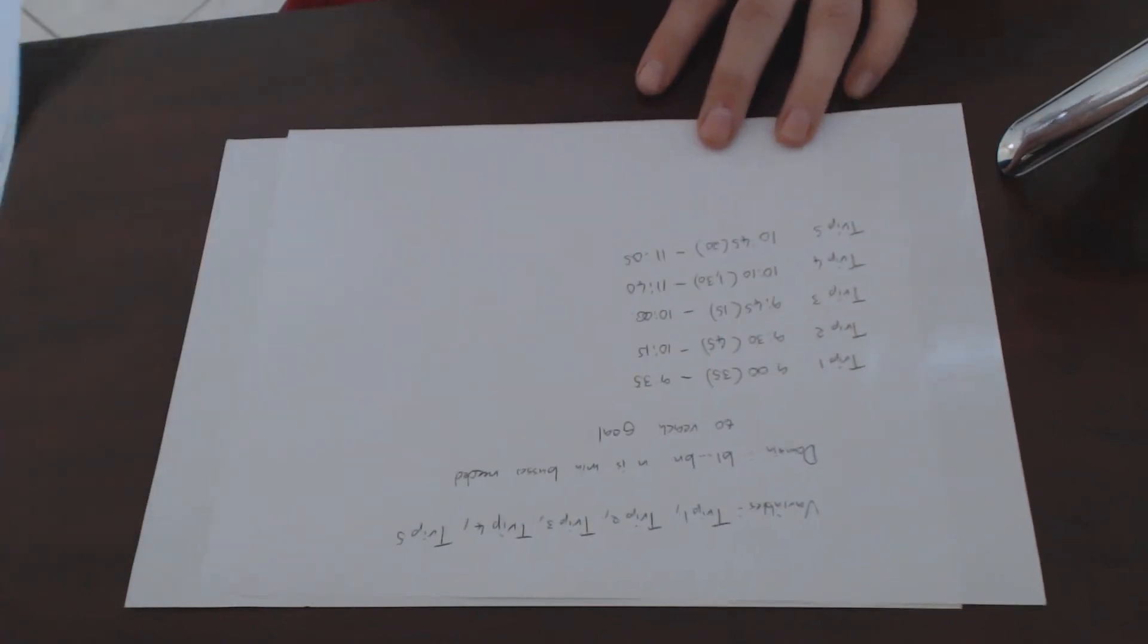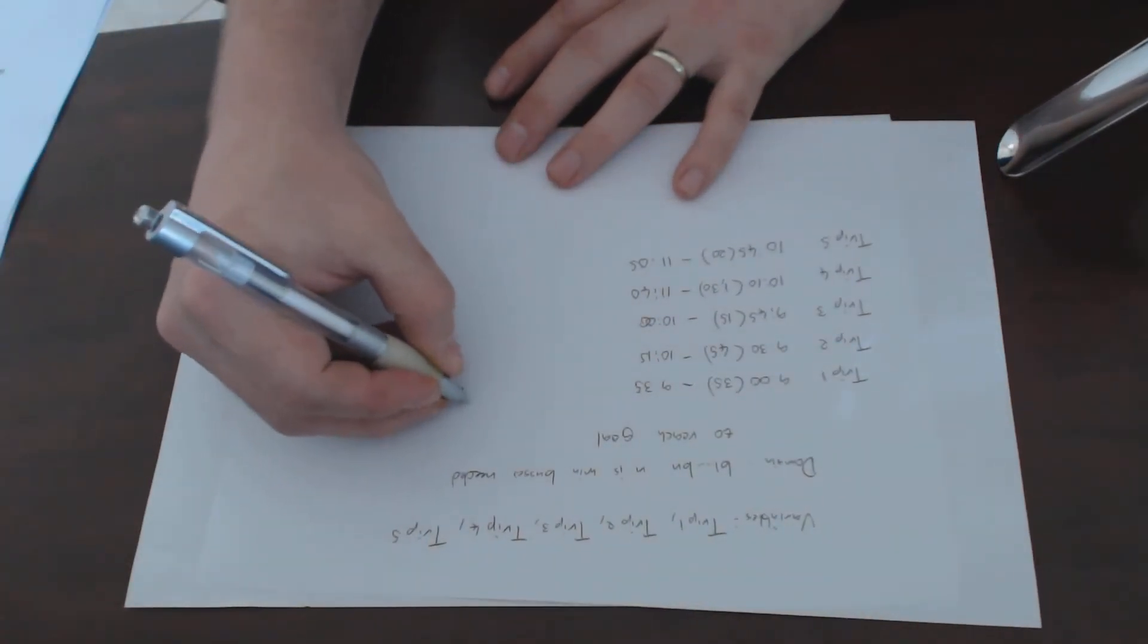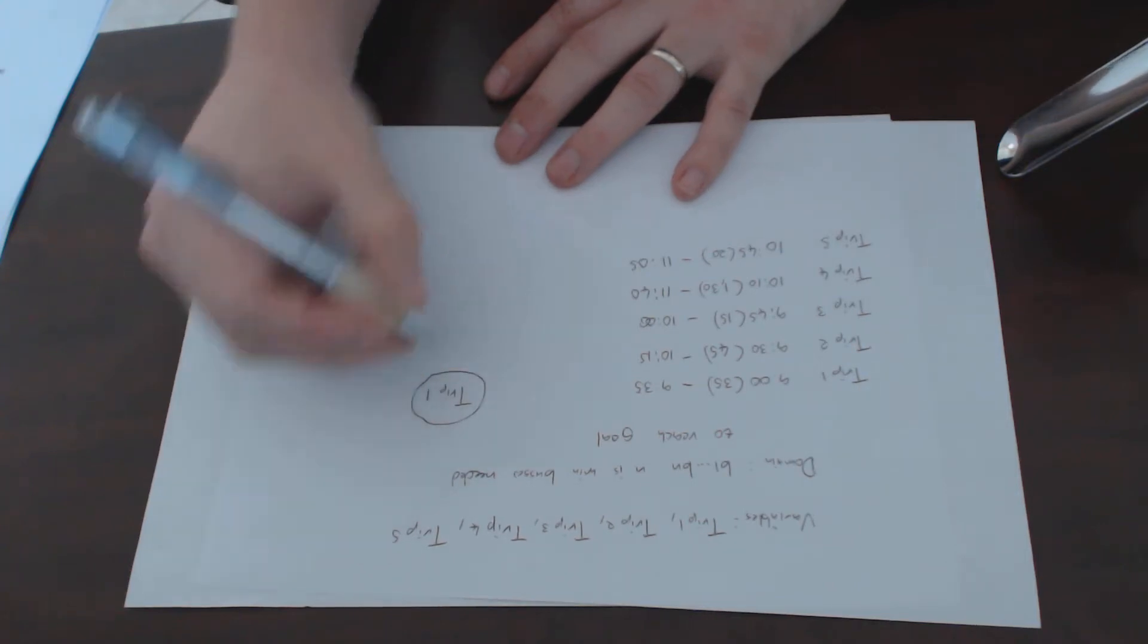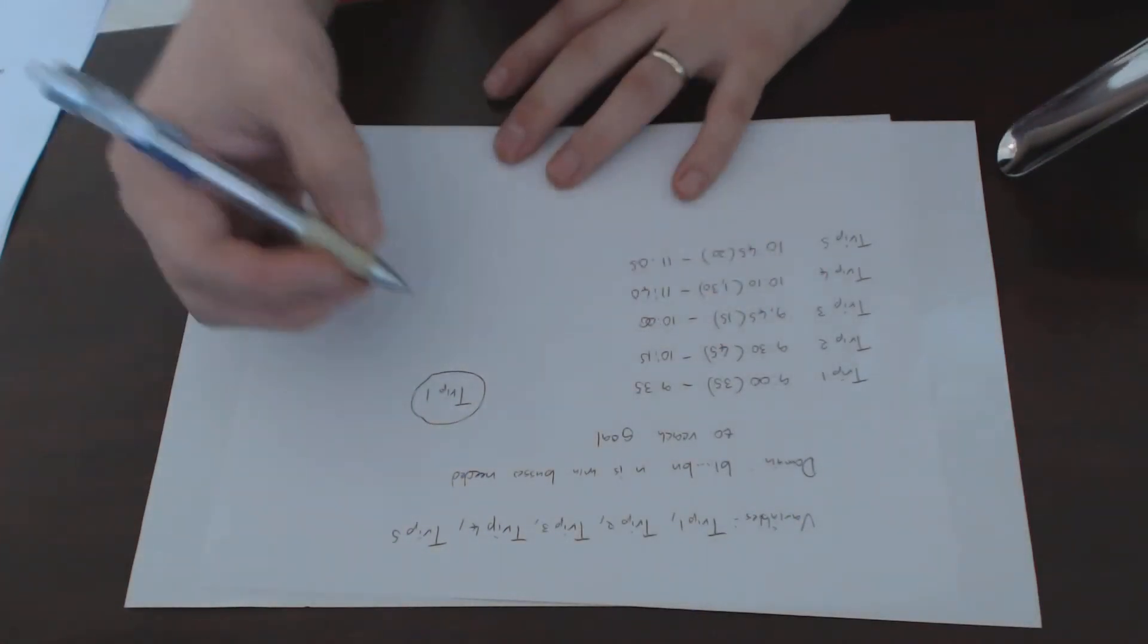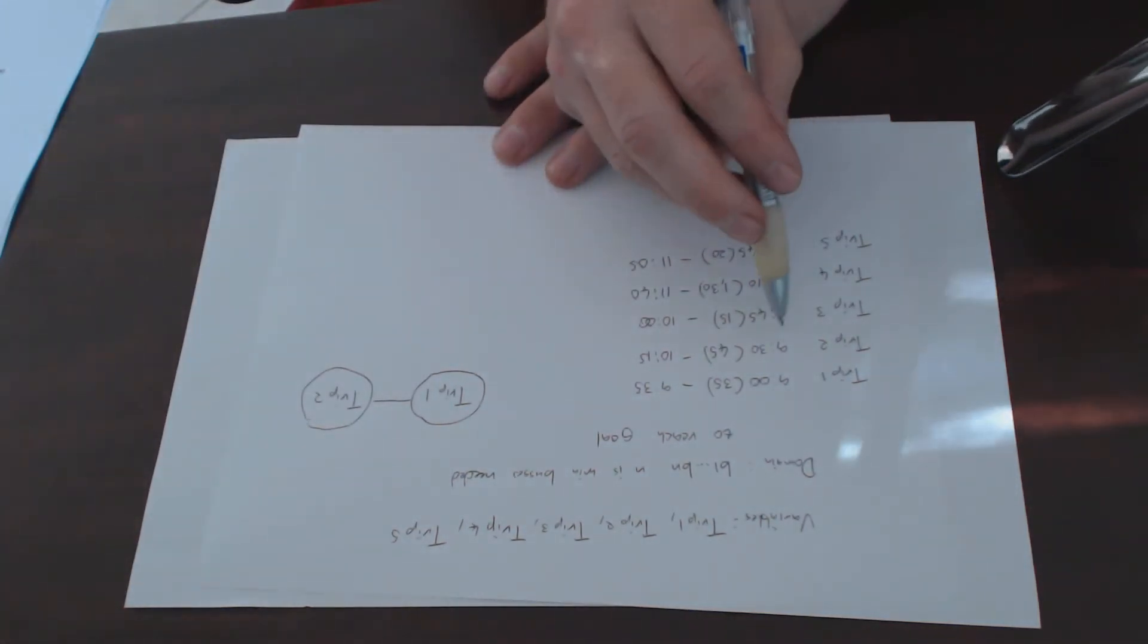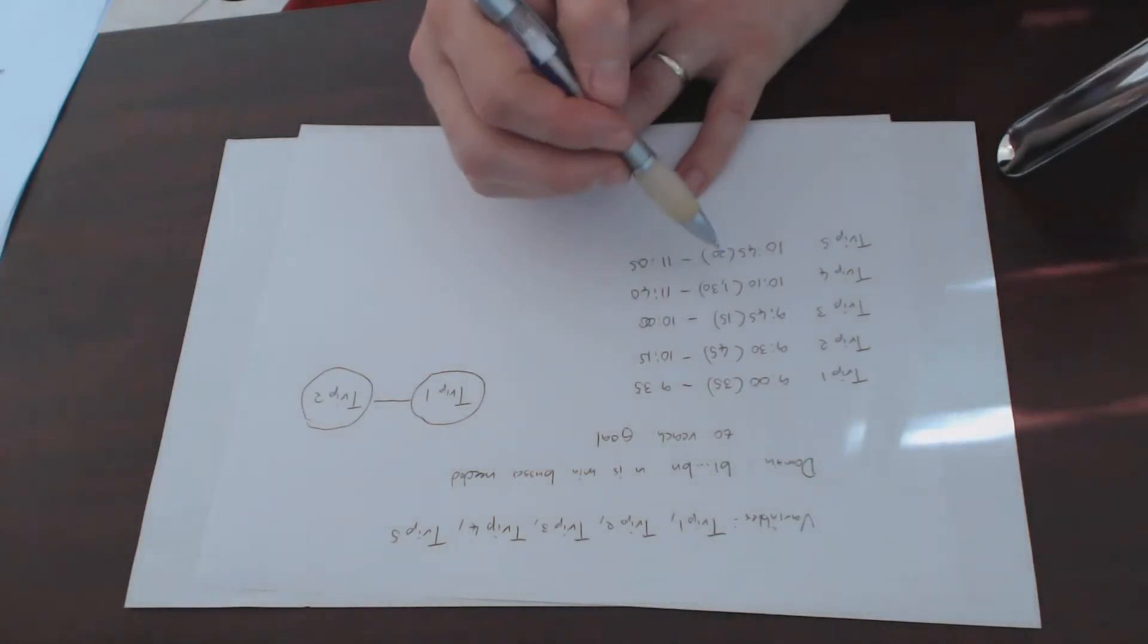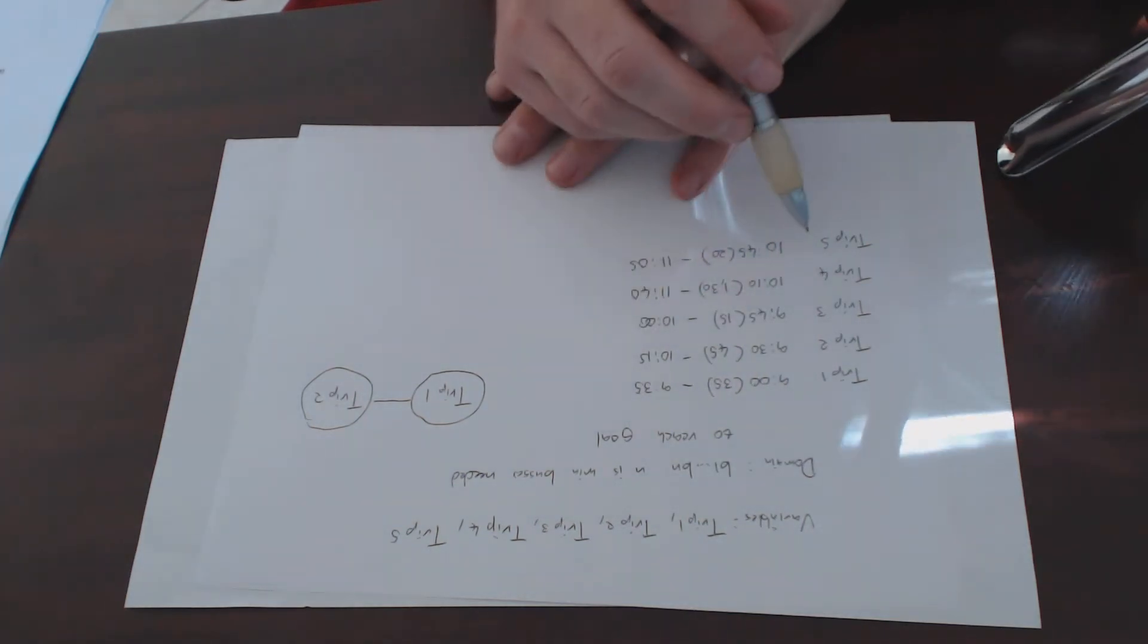Now I've identified the constraints. Let's draw the constraint graph. Start off with trip1, 9 to 9:35. It has a constraint on trip2 because trip2 is departing at 9:30 and trip1 wouldn't have arrived back yet. Nothing else is being affected because everything else is starting after 9:35.